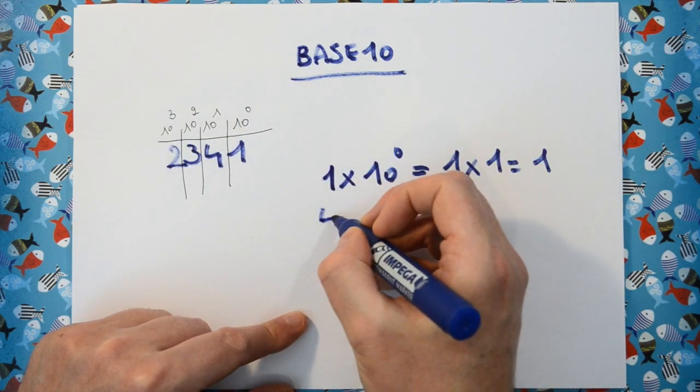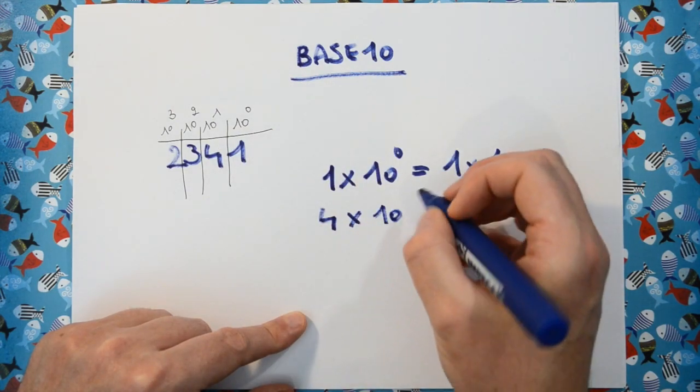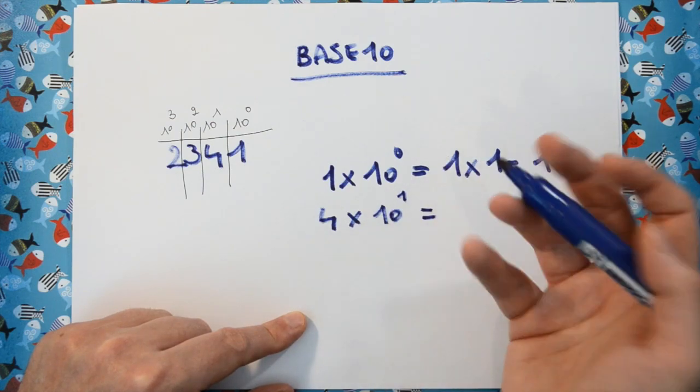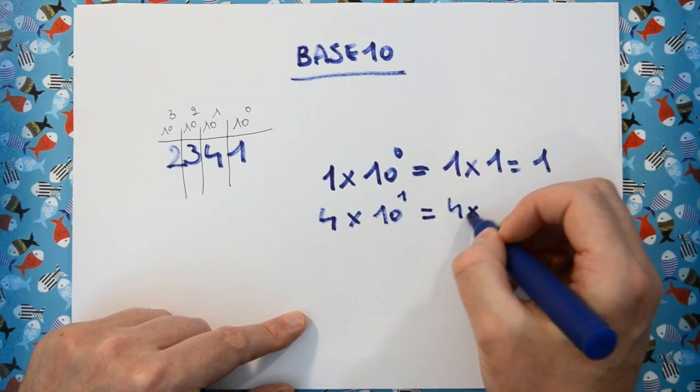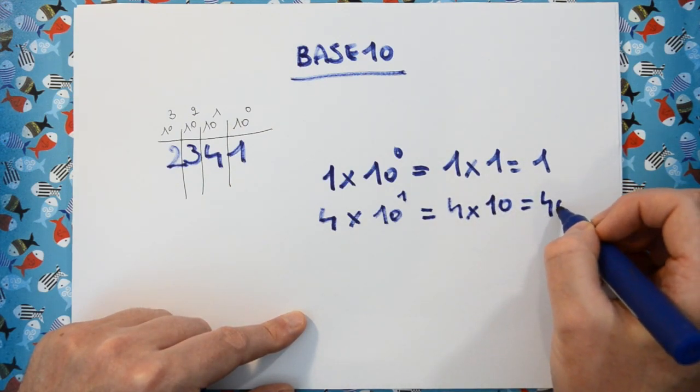10 to the power of 1 there is. So 10 to the power of 1 is just 10. So we have 4 times 10, which equals 40.